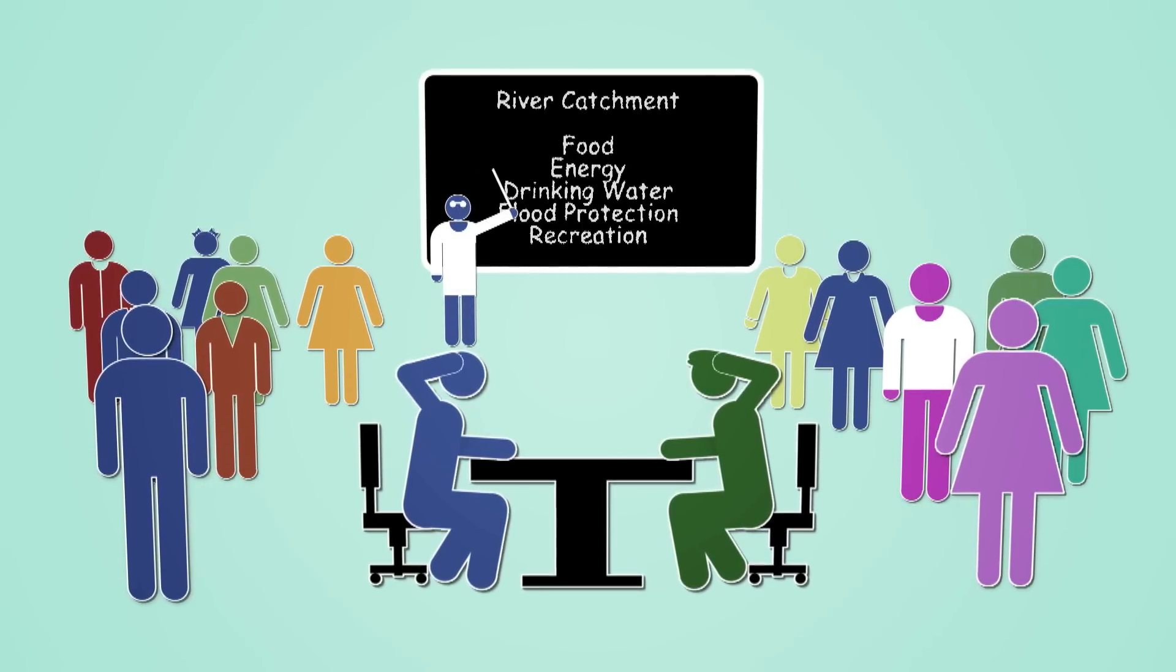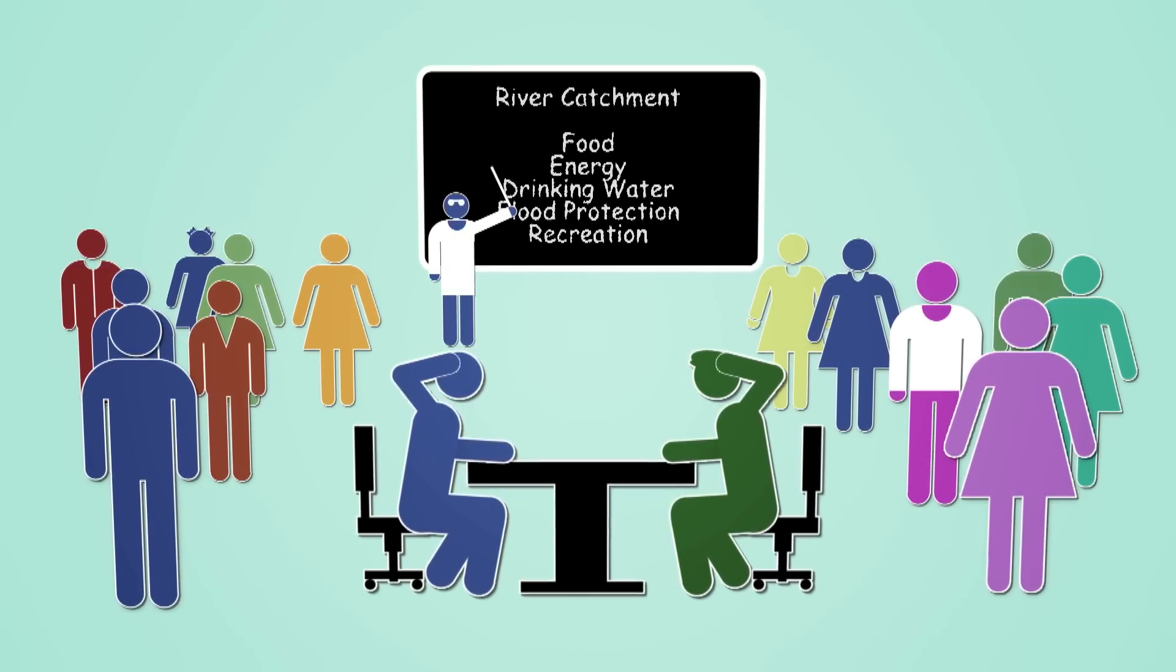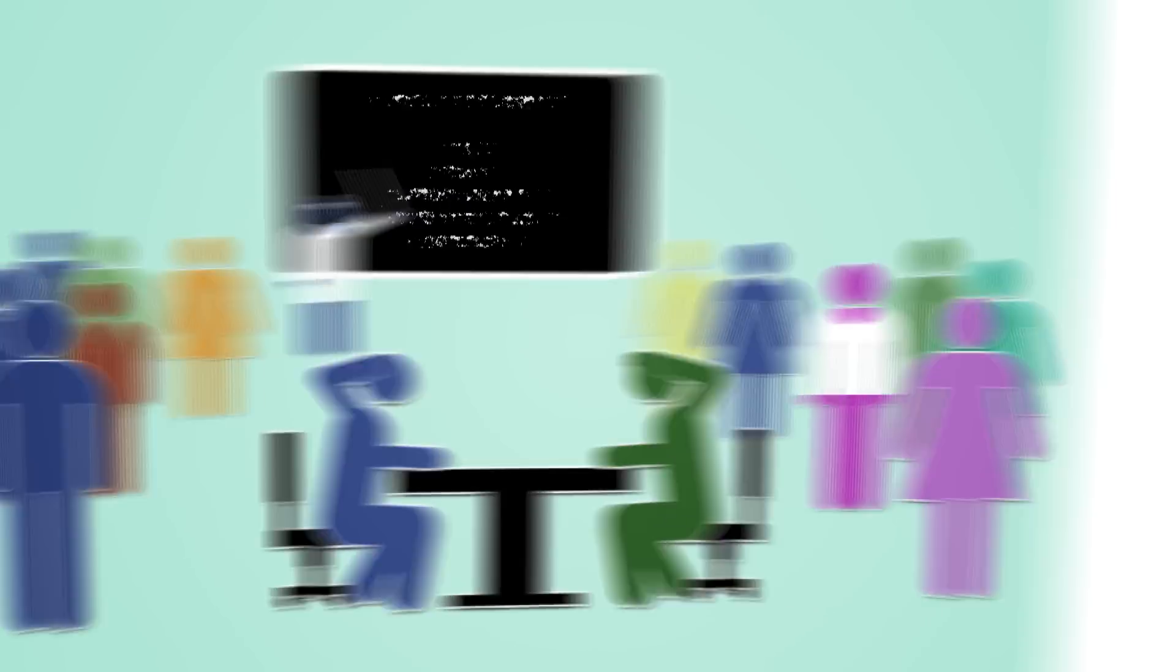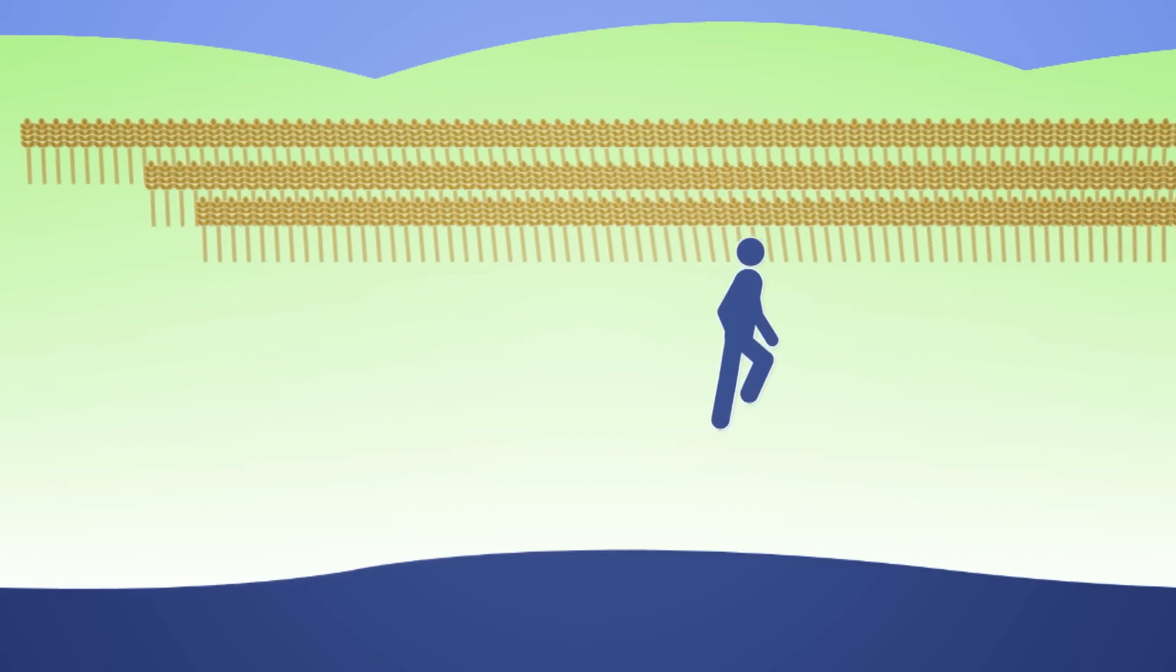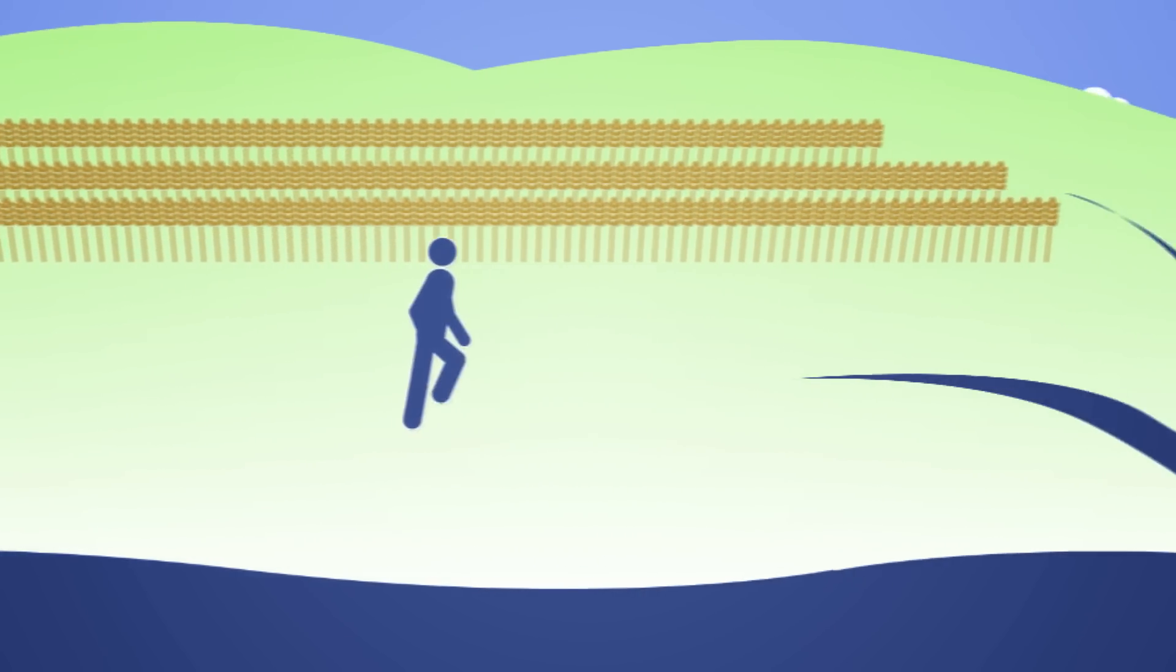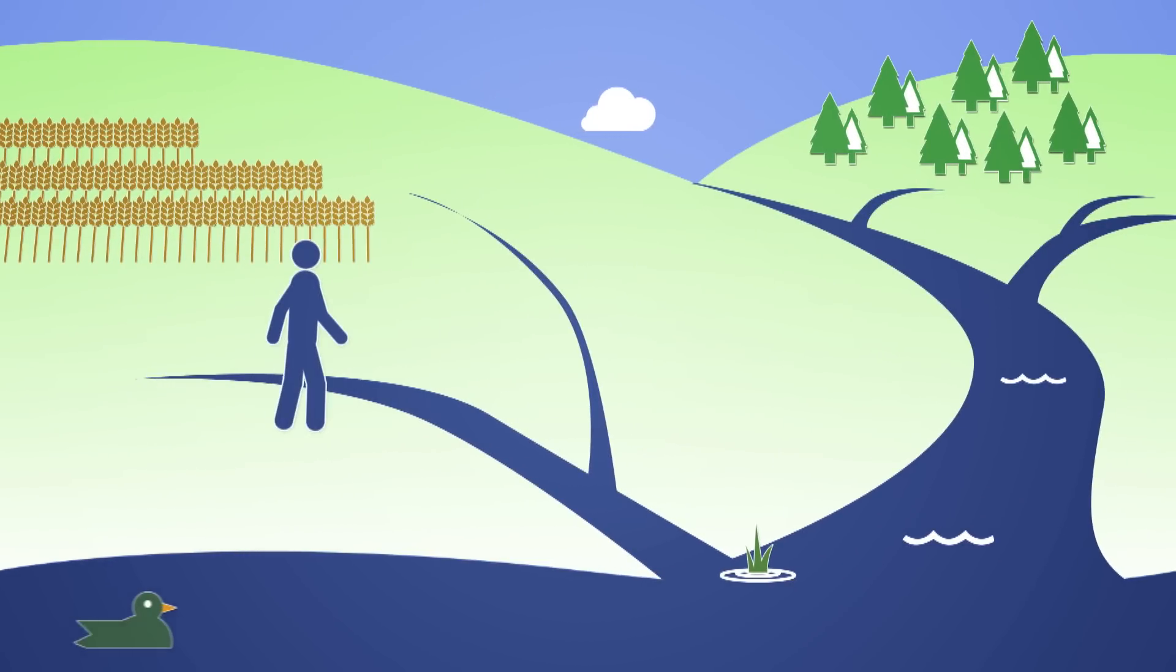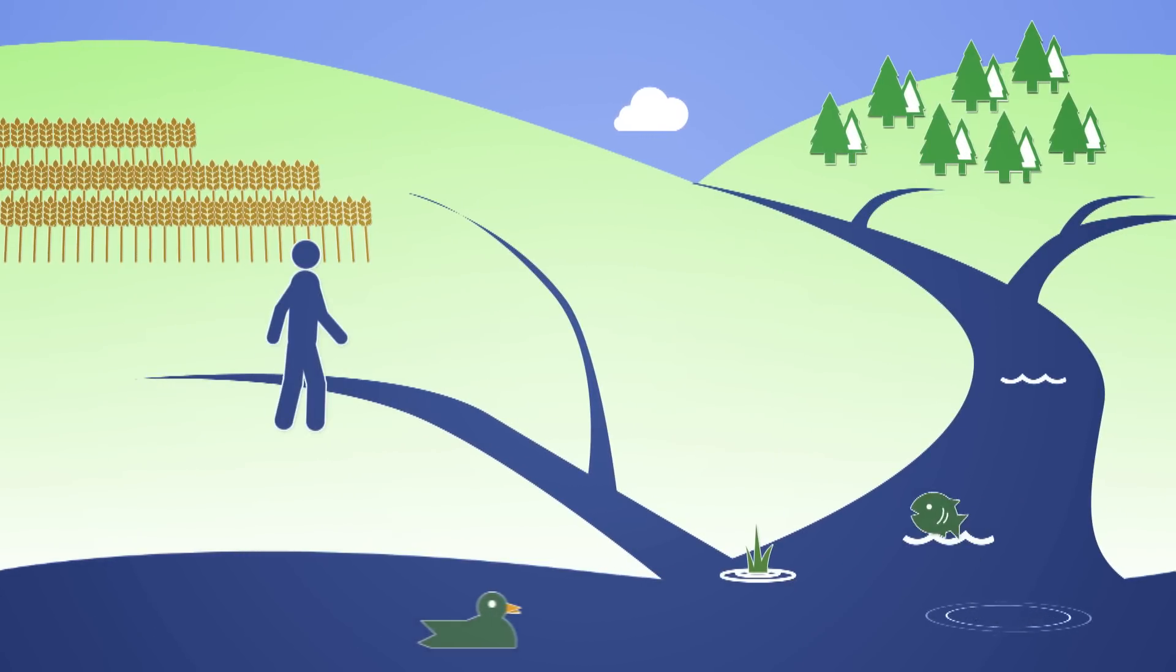To overcome this, we need to review the information and what it means to our society. We must divide the land up into manageable areas such as river catchments. Rivers drain the land and are good indicators of how well we're managing these services.